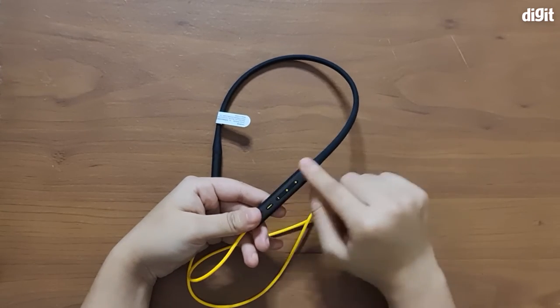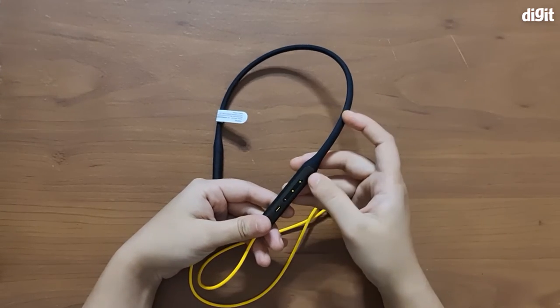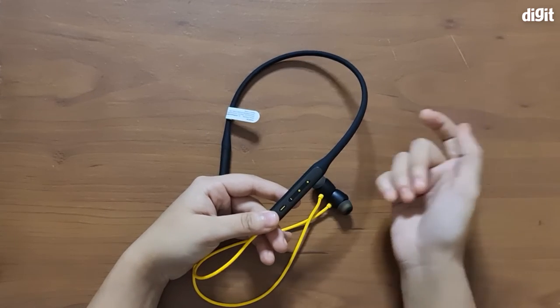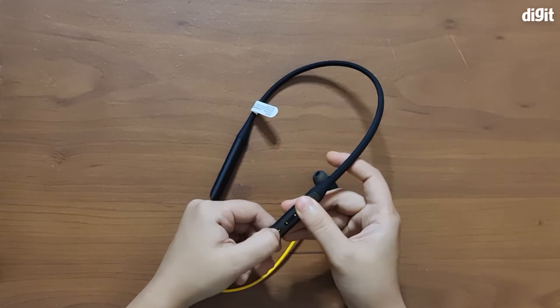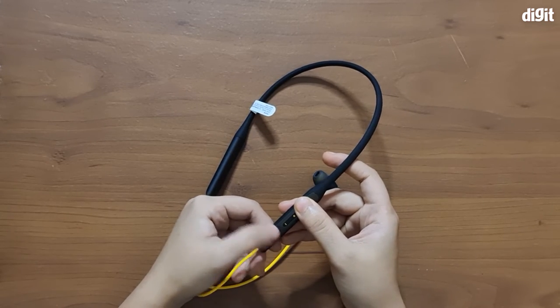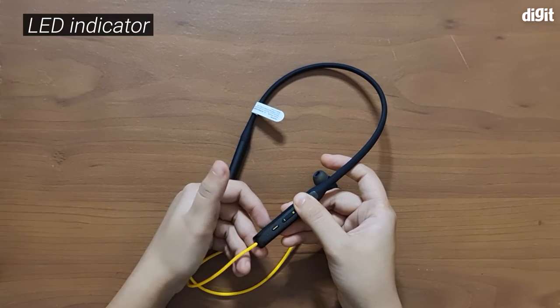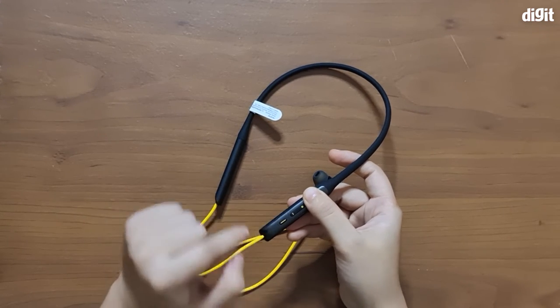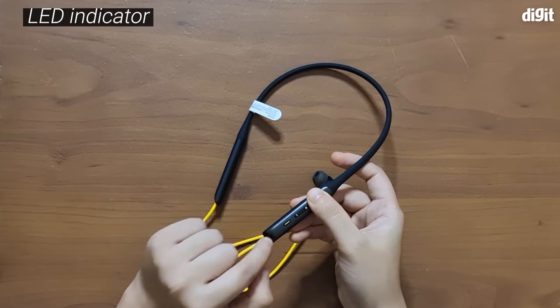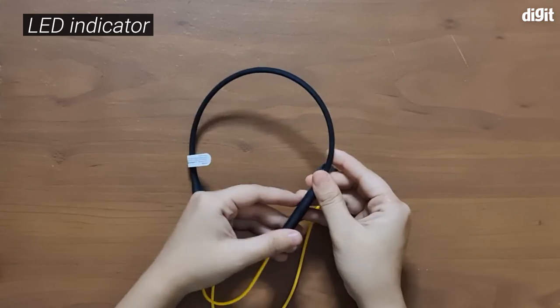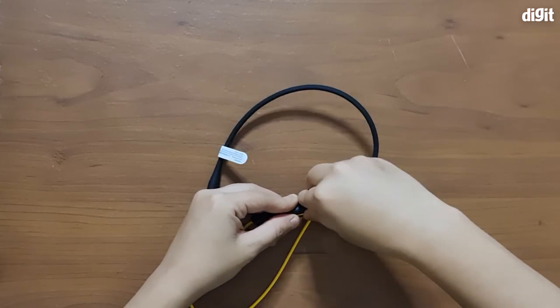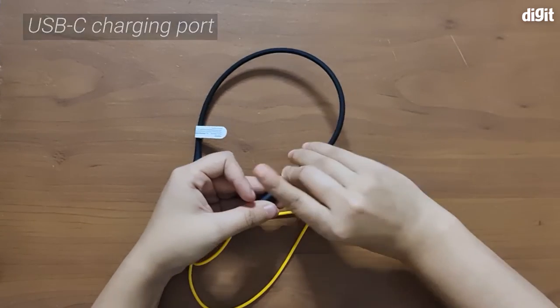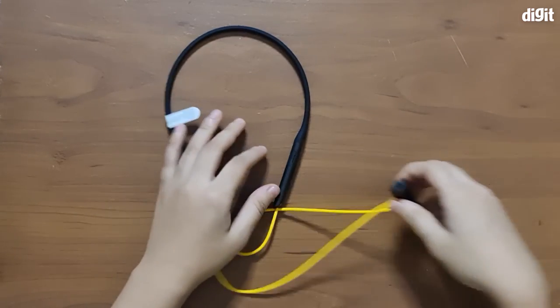On the right hand side is where all the action is. First of all, you have a volume plus and a volume minus button. Then you have the middle button, which is the multi-function button. Lastly, you have this button right here, which is the ANC button. This one turns ANC on, turns it off, and turns on transparent mode. It cycles through these modes. You also have a tiny LED indicator right here. To the side, you have a little flap which opens up to the USB-C charging port, and that's about it for the neckband.